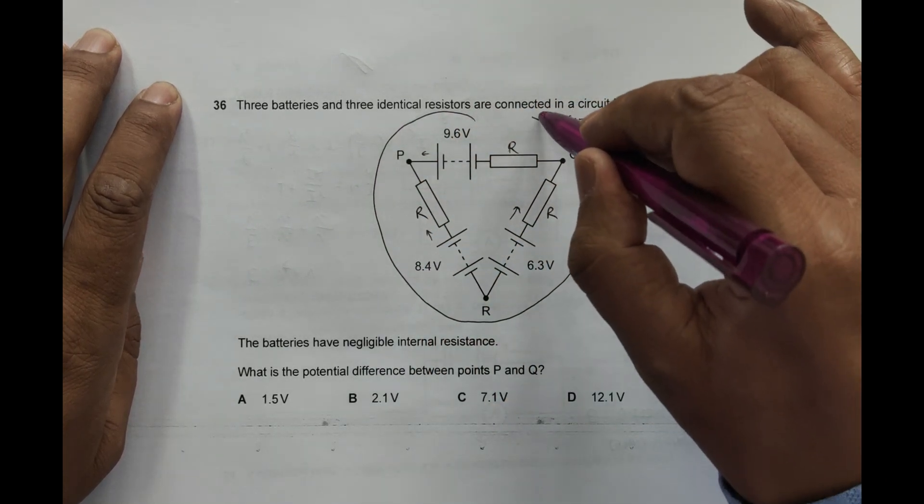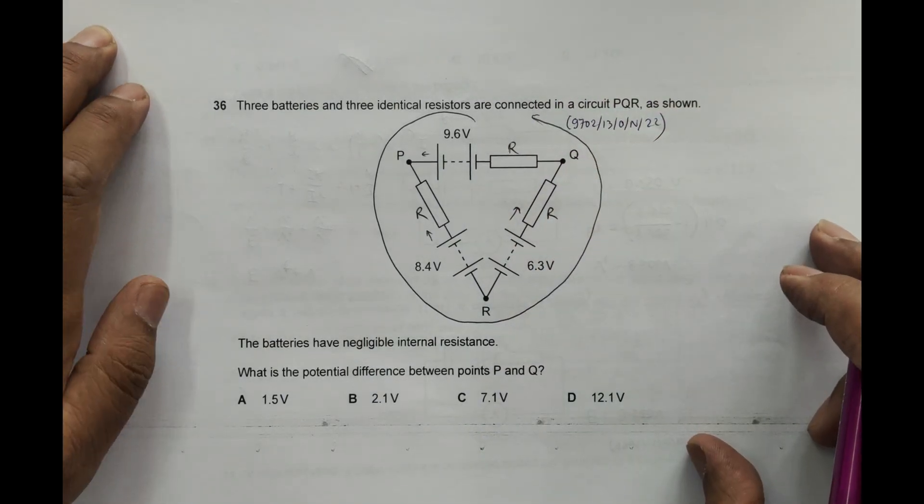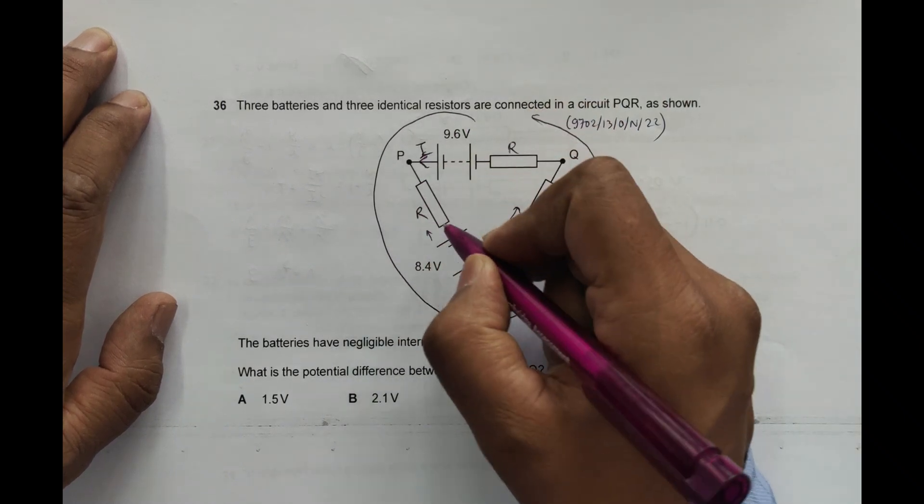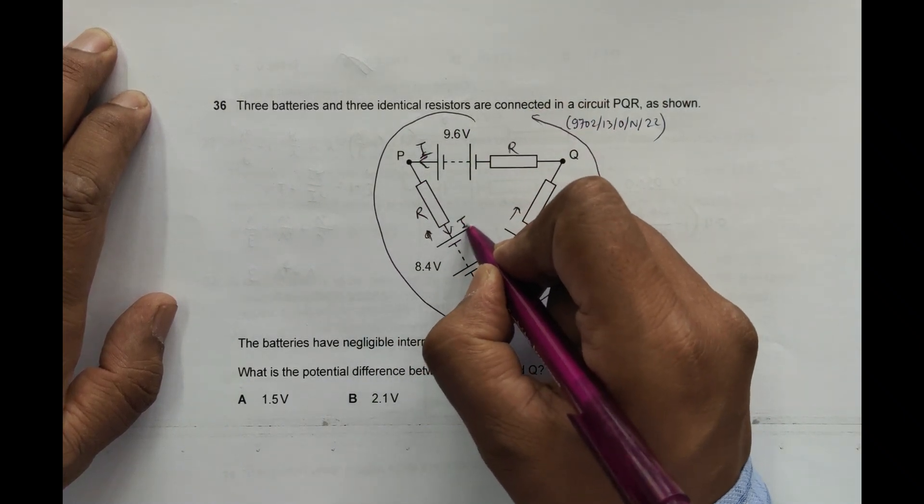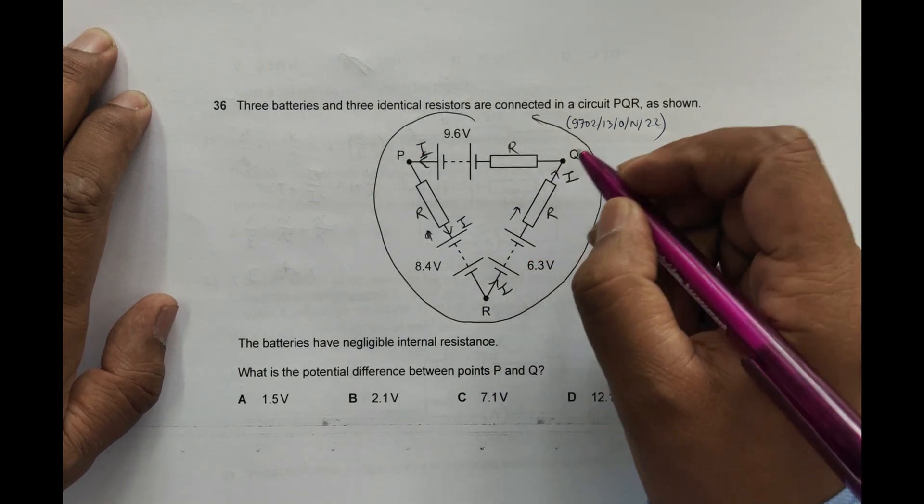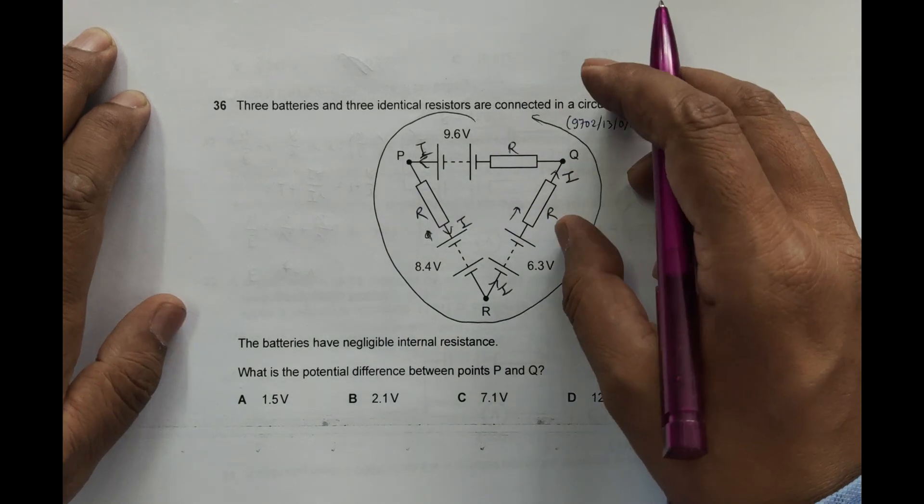So I will take this as the direction of current and apply Kirchhoff's voltage law. It will be current I here, current I here, current I like this. The current will flow in anticlockwise direction. Now we apply Kirchhoff's law.